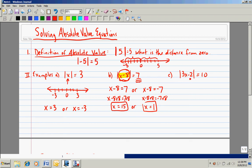Last example. The absolute value of 3x minus 2 is equal to 10. Again, what this means is that 3x minus 2 is 10 spaces from 0. Well, if I go 10 spaces to the right, I would be at positive 10, or I could go 10 spaces to the left to be at negative 10.